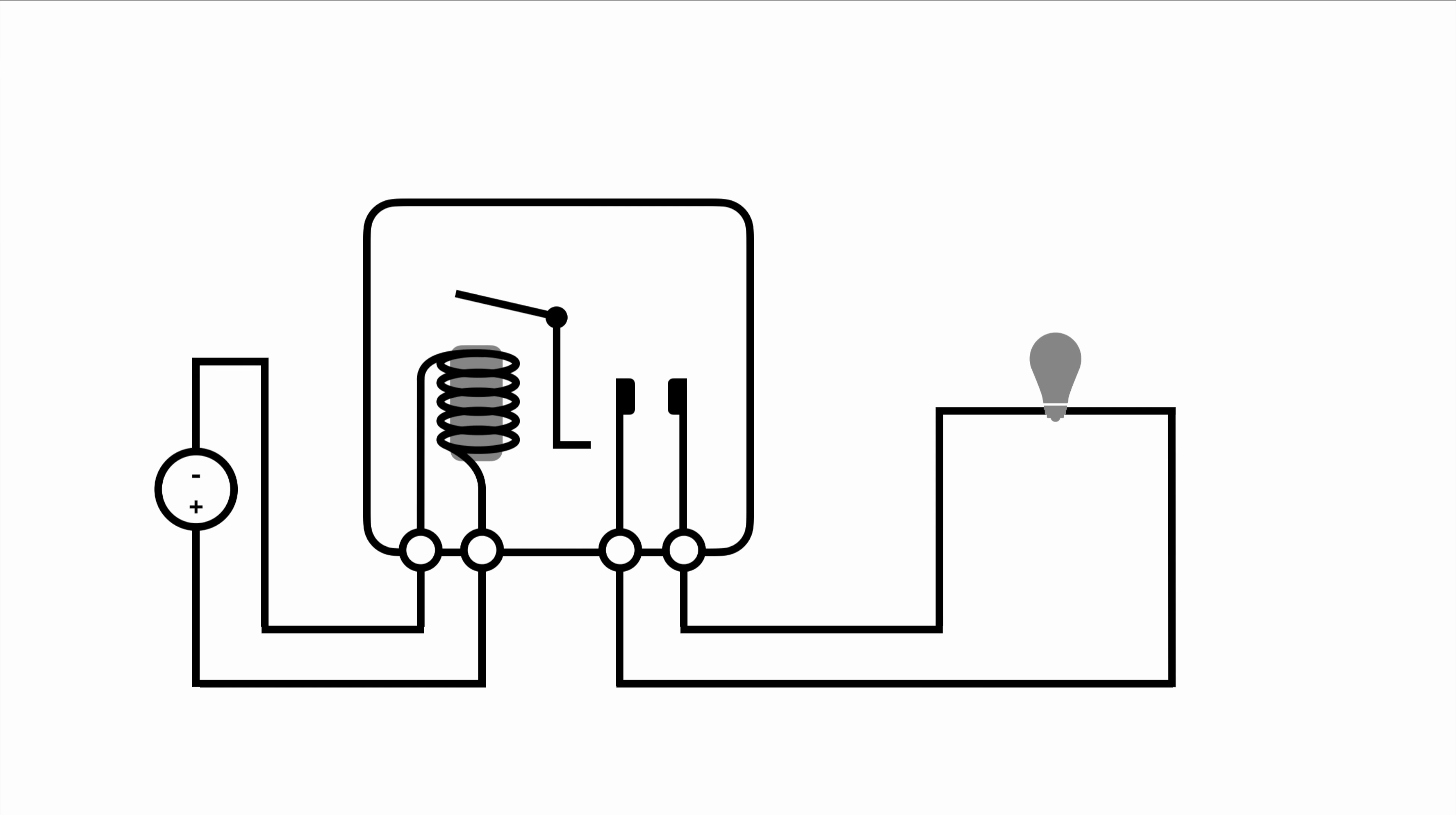So what you would do is you apply a voltage in the activation circuit to run electrons through the coil and you see there's a core inside the coil. This will create a magnetic field, move the pallet down and actually close the circuit on the load side.